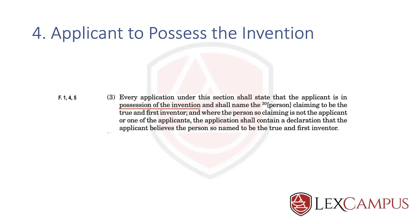Possession is a concept you demonstrate when you file or draft the application. It cannot be the case that you do not disclose the invention and still file an application. If you do not make what we call an enabling disclosure — a disclosure which a person skilled in the art can understand — it would be assumed that you did not possess the invention. In Form 1 there is a specific checklist provision where you tick to confirm the applicant is in possession. Possession does not mean a prototype or data; it means a concept described in detail in the application.